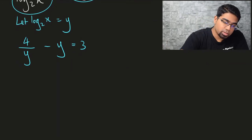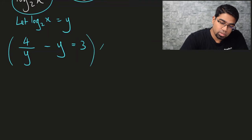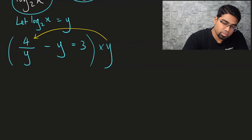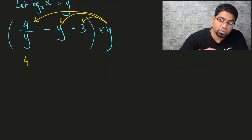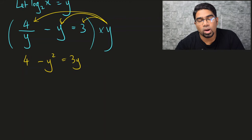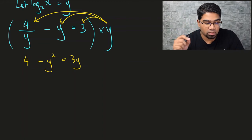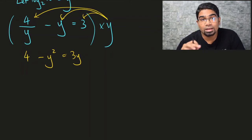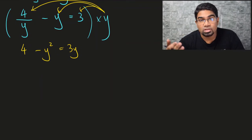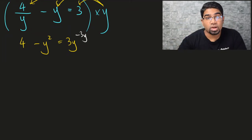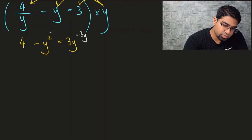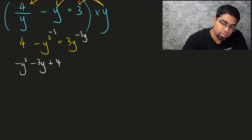To solve this as a quadratic, we multiply the whole equation by y. This gives us 4 minus y² equals 3y. We then move 3y to the left side: minus y² minus 3y plus 4 equals 0.